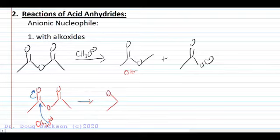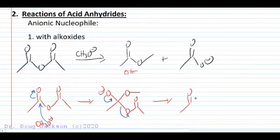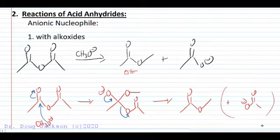If we take our alkoxide and attack one of the two carbonyls—doesn't matter which—we form a tetrahedral intermediate. We just added the methoxide there it is, and then on the other end we have our acetate. At this point we look at our leaving groups and the best leaving group is indeed the acetate here. We would show that as leaving irreversibly to form our ester in two mechanistic steps.